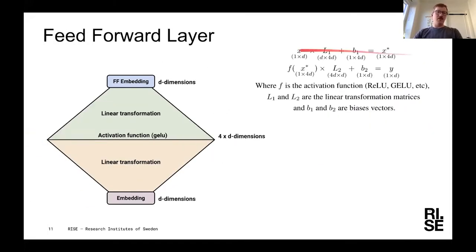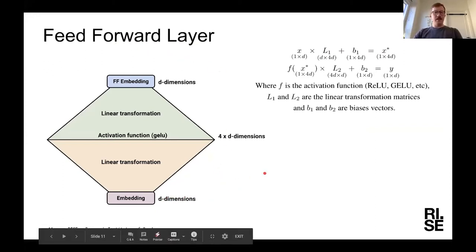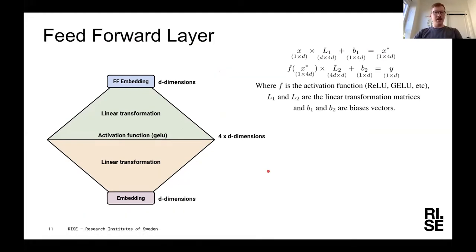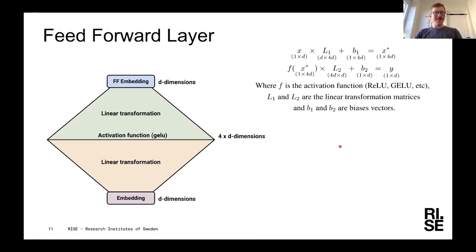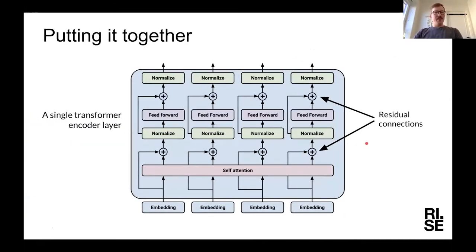The other component is the feedforward layer. Anyone who has worked with neural networks should be familiar with it. The embeddings are d-dimensional. In the transformer you have a linear transformation that expands the embedding to a larger dimension — in transformers it's often four times the size. Then you have a non-linear activation function operating on this, and then you project it back into a smaller layer. This allows the weights to intermingle with each other.